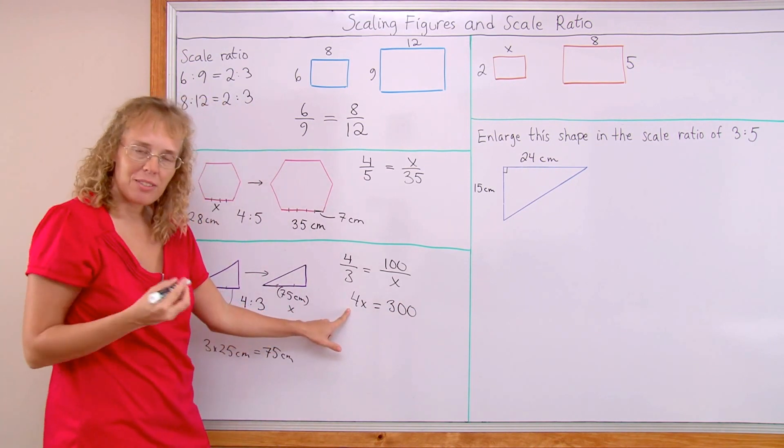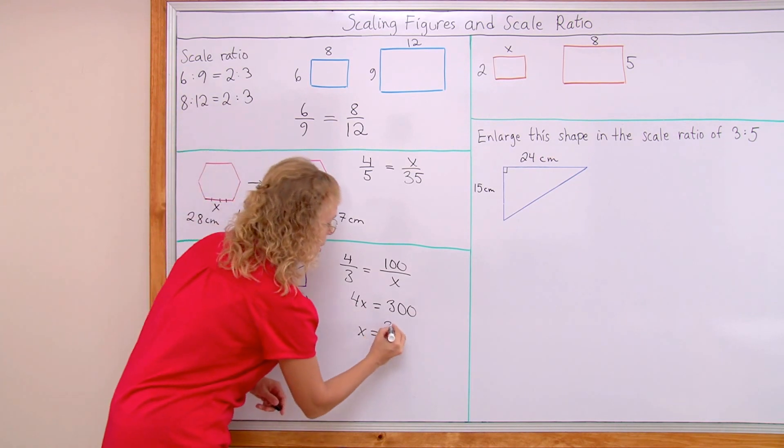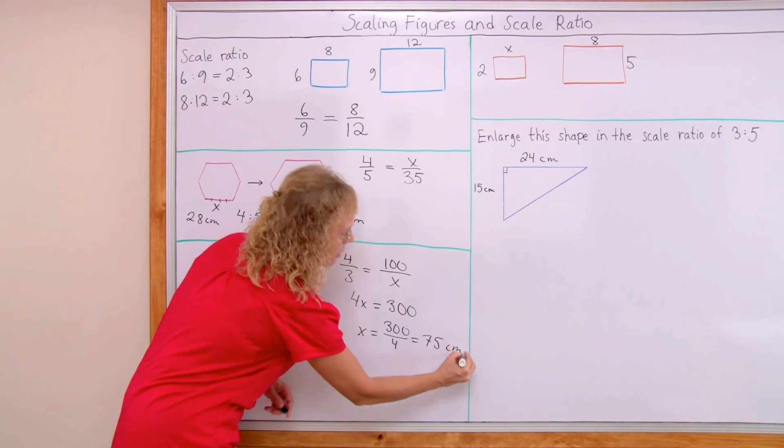And then you solve it in the regular way by cross-multiplying 4 times x equals 3 times 100. And then from here we divide both sides by 4, so x equals 300 divided by 4, which of course is the same 75 cm.